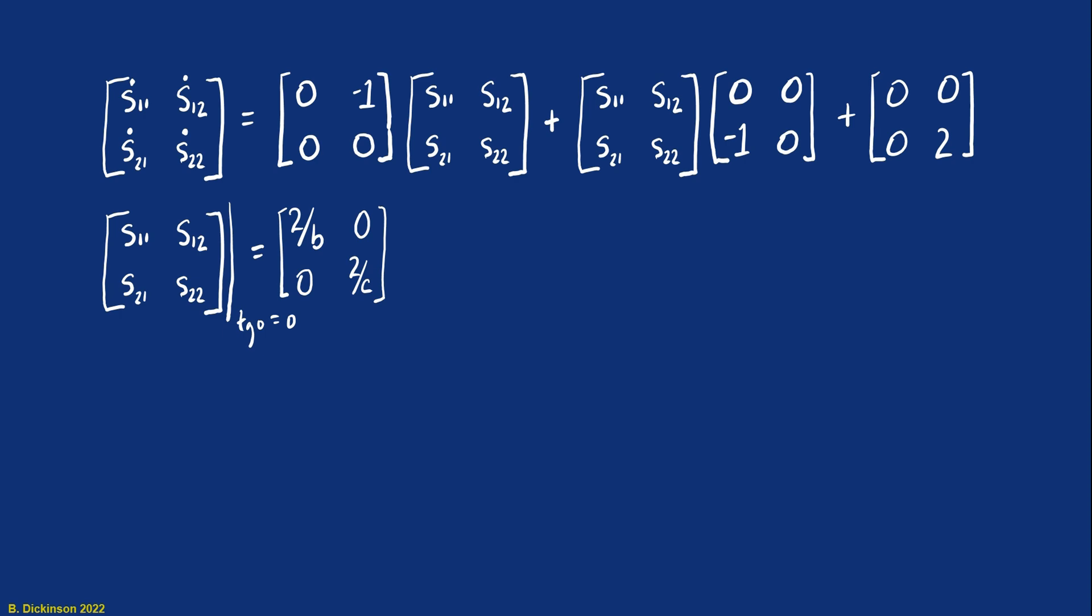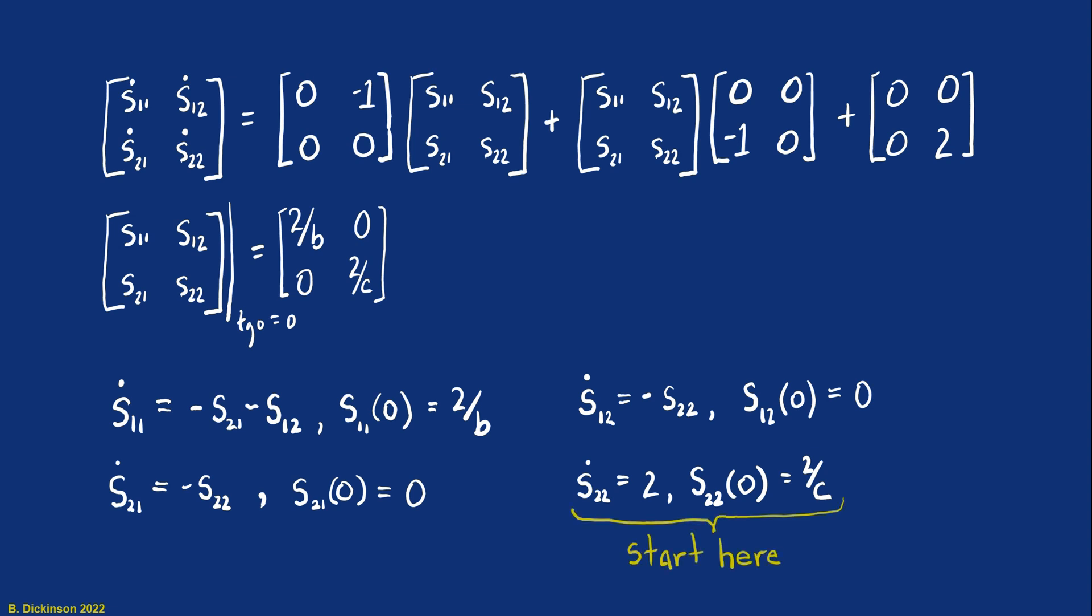At this point, we can pull out the individual equations and attempt to solve them. Let's identify those. Let's work first with S11. So remember, matrix vector multiplication, rows times columns. So there's the equation for S11 dot. Notice that we've applied the initial condition. S12 dot. S21 dot. And S22 dot. Its right hand side is just two. So we can integrate that without knowing any of the other elements of the S matrix. The other thing to note here is that S12 is actually equal to S21. They're the same equation. So the solution here is symmetric. S is a symmetric matrix. And also then, P, the solution to the Riccati equation, will be a symmetric matrix.